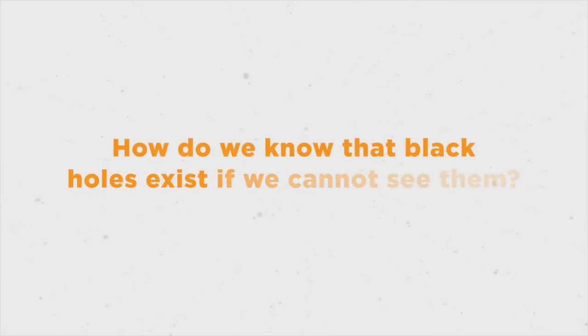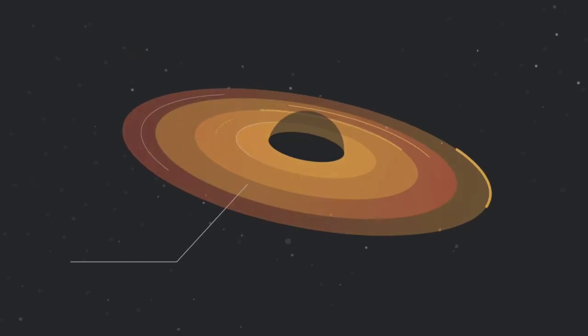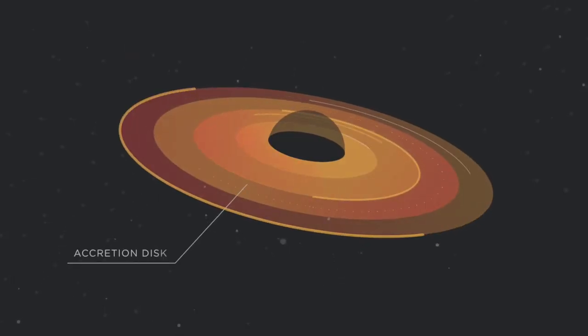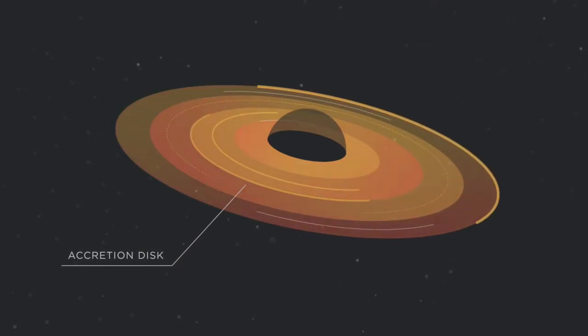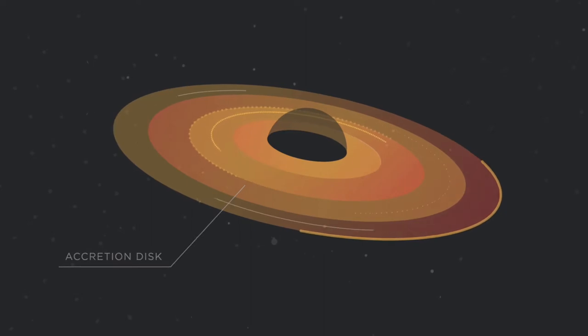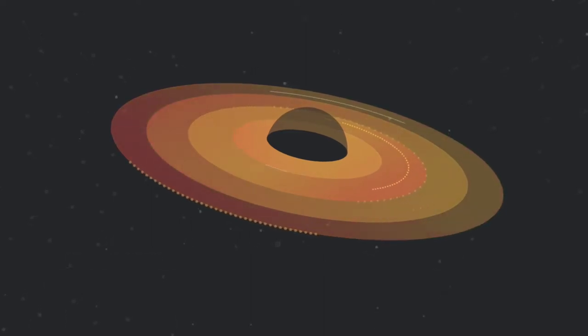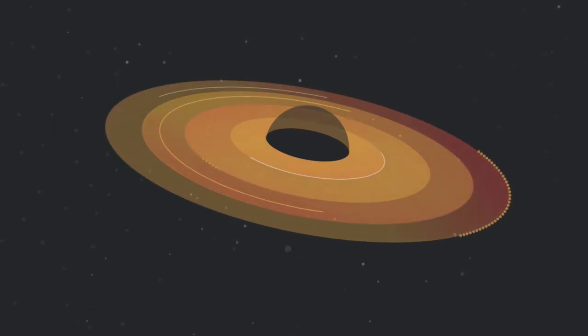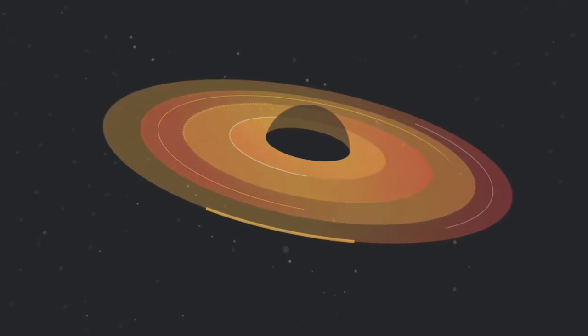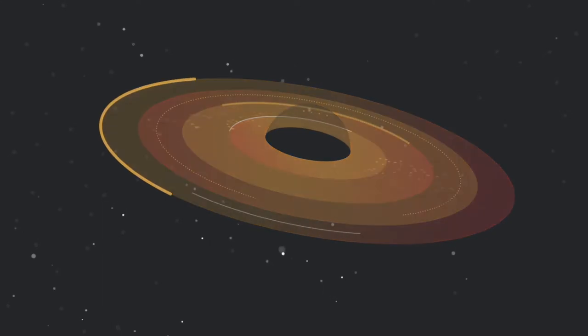How do we know black holes exist if we cannot see them? When a black hole is feeding on matter within its vicinity, that material can become very bright, allowing its detection in a phenomena called accretion. As this material spirals in towards the black hole, it orbits faster and faster, interacts with other spiraling material, getting heated and forming a bright, flattened ring called an accretion disk.